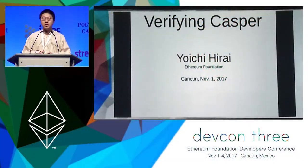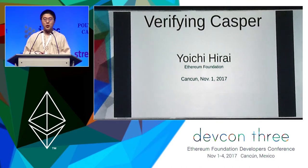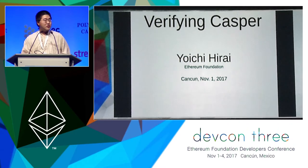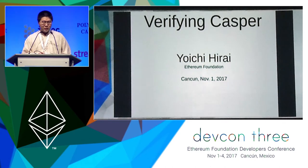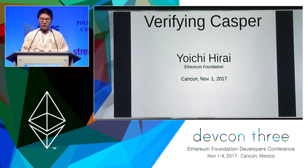I talk about verifying Casper. Casper is the name of the brand proof-of-stake protocol that Ethereum will be using. It's also the name of the research group designing the protocol. It's been changing and may continue to change. There are multiple versions of Casper; I'm talking about my best guess at the first Casper that will be deployed on the main chain.